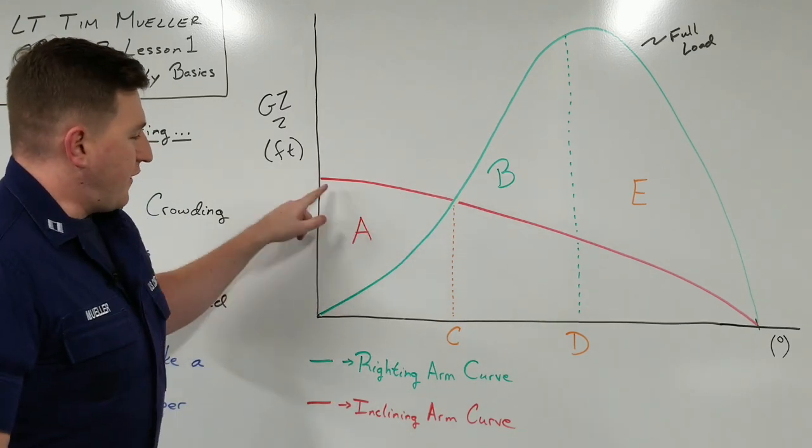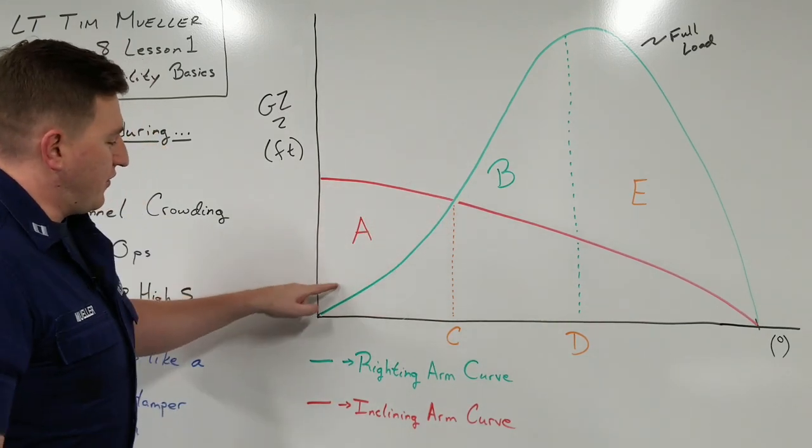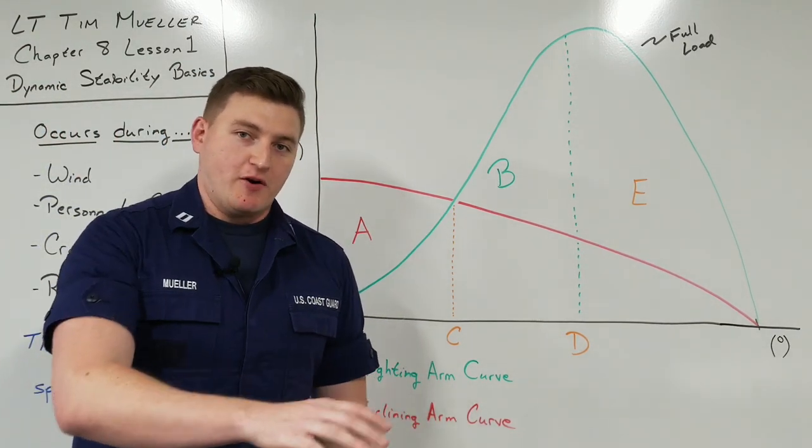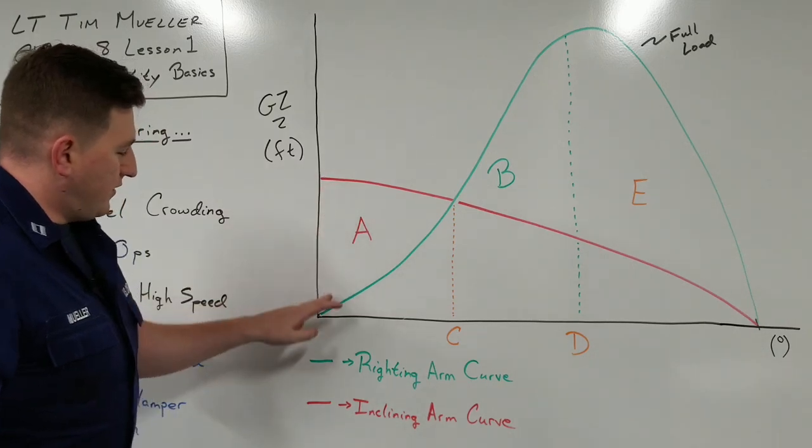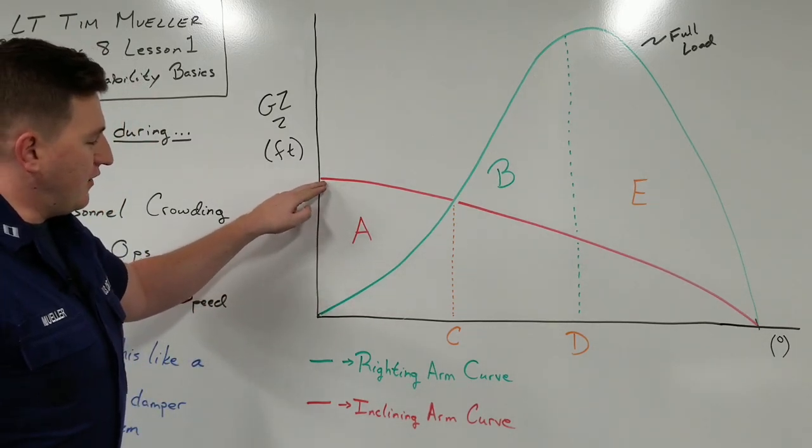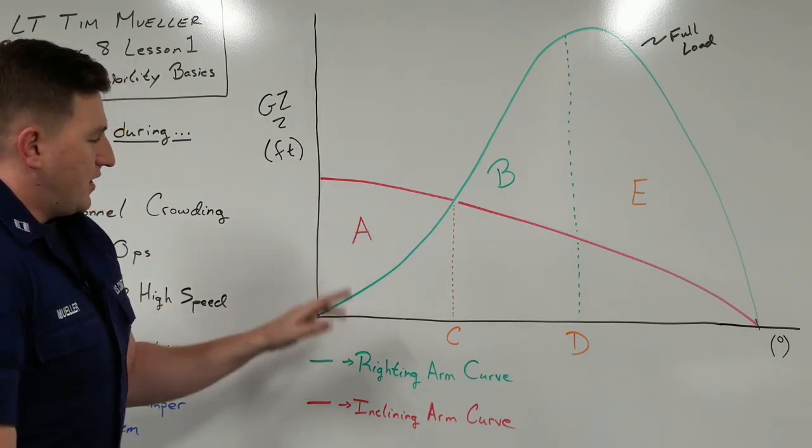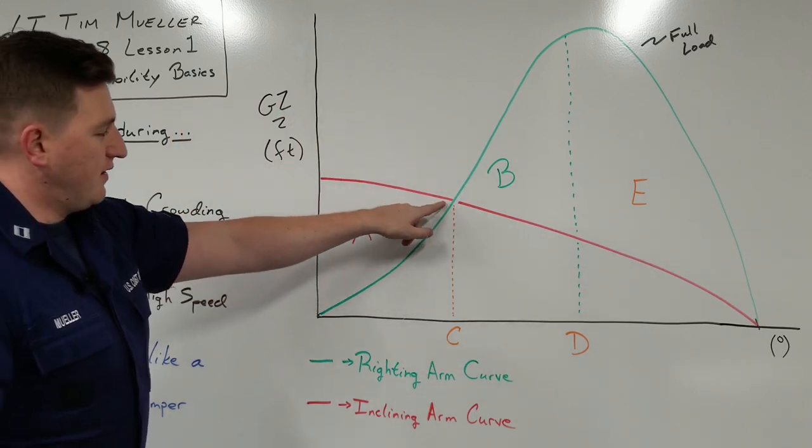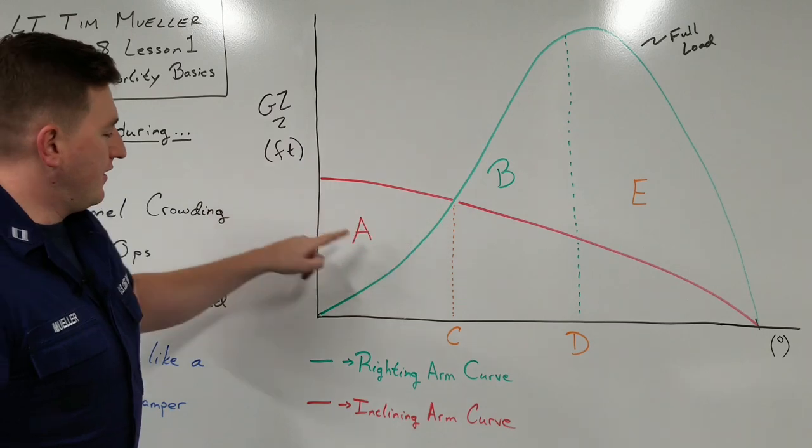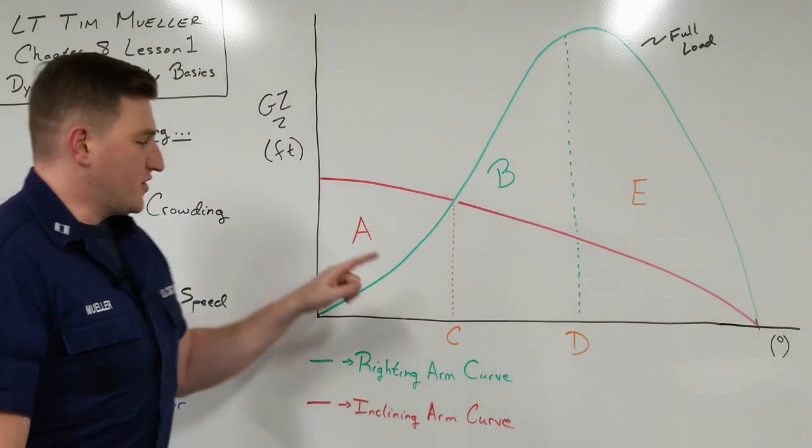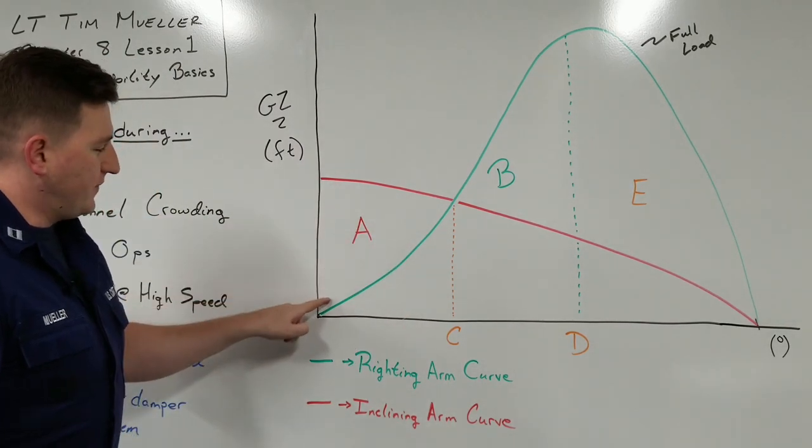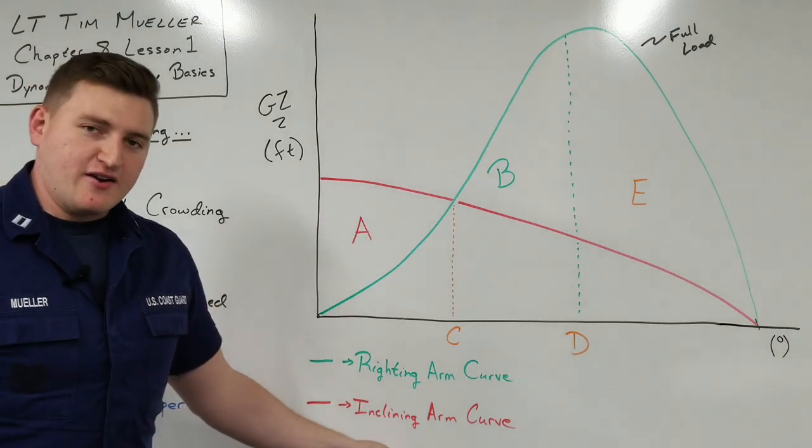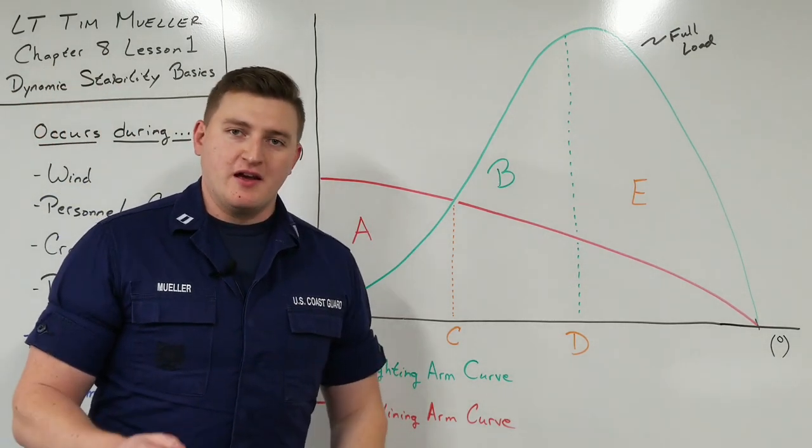So just think, for A, we're thinking of all this, I call it bad energy, all the energy that is trying to capsize the ship over. At this point here, there's much more of an inclining arm than there is a righting arm. So we know that the ship is going to start inclining over and over and over until it hits some point here. We're going to get into that in a second, but just know that this A, this alpha, is this triangle here. And we're going to call that our inclining energy or, as I make it a little bit easier, bad energy.